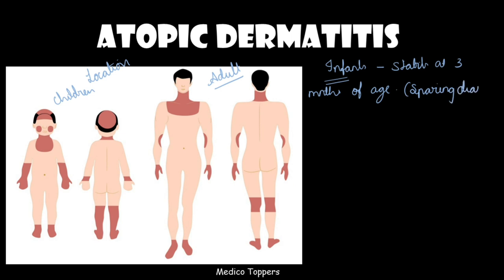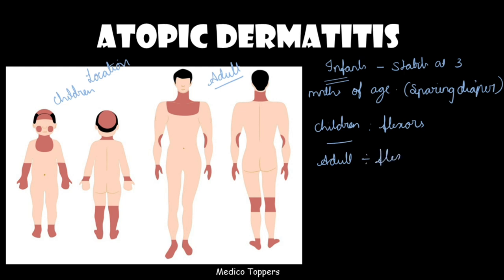In children, the lesions will be on flexors — this is the key differentiating point. In psoriasis, lesions are on extensors; in atopic dermatitis, children suffer from flexor lesions. The same applies in adults — they have lesions on the flexor aspect. Location is therefore very helpful in diagnosis.